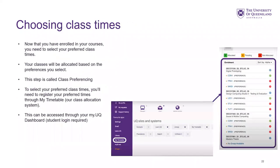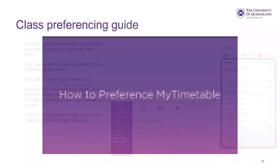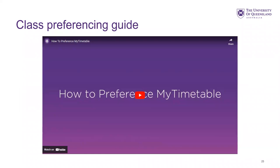So choosing class times. You've hopefully enrolled in your courses already, and now you need to select your preferred class times. Your classes will be allocated based on the preferences you select — this is called class preferencing. To select your preferred class times, you'll need to register your preferences through My Timetable, which is the class allocation system accessible through the MyUQ dashboard.